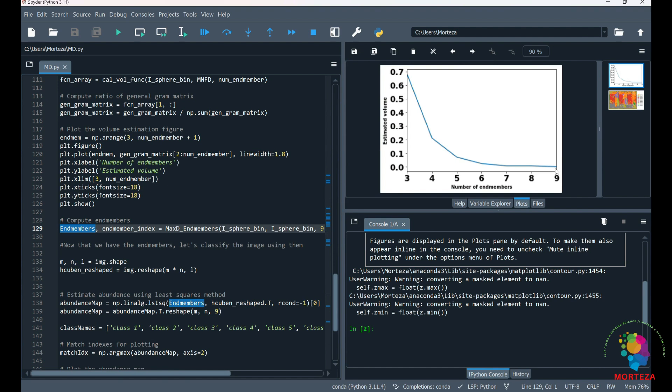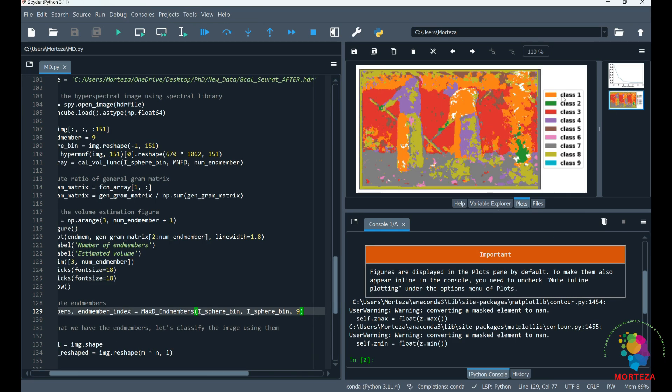Okay, this is the plot of the end members—how many end members we have. Right here, where the determinant of the gram matrix approaches zero but it's still not zero, that's where it indicates the number of linearly independent end members. Here it's nine, and this is the result as you can see for nine classes.